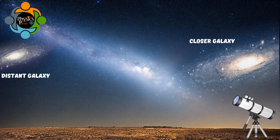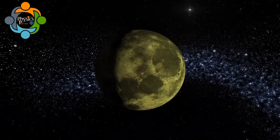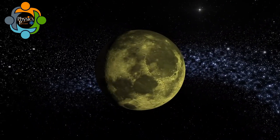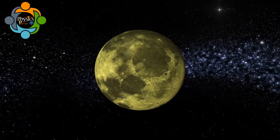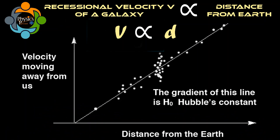From this observation he concluded that galaxies or stars which are further away from Earth are moving faster than galaxies which are closer. According to Hubble's Law, the recessional velocity v of a galaxy is proportional to its distance from Earth.